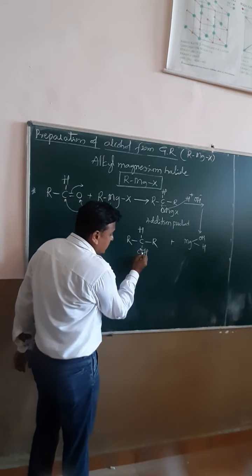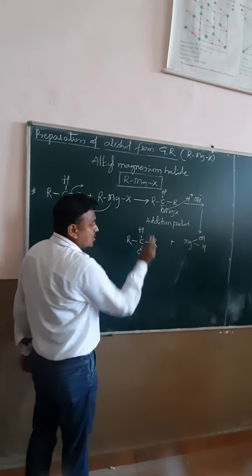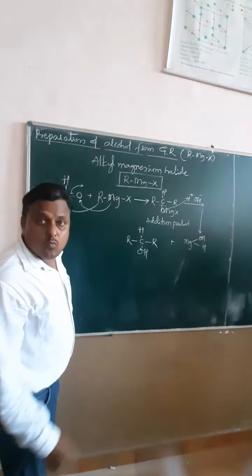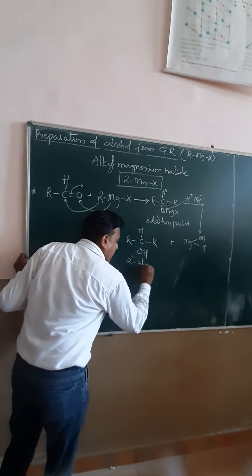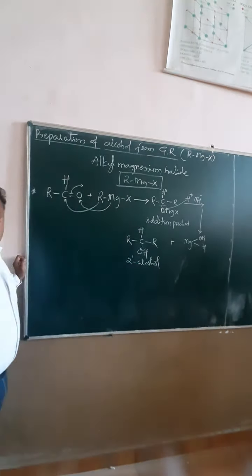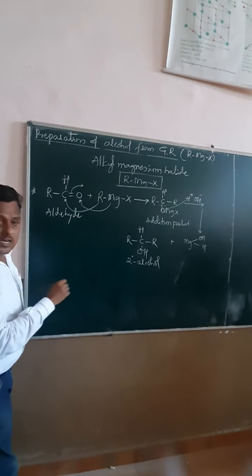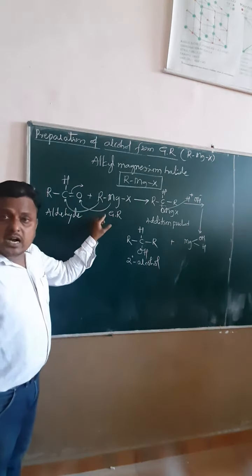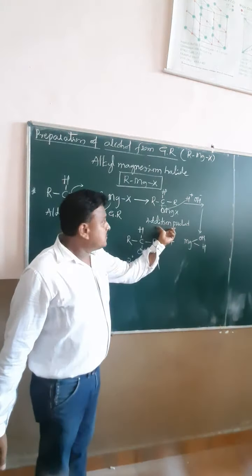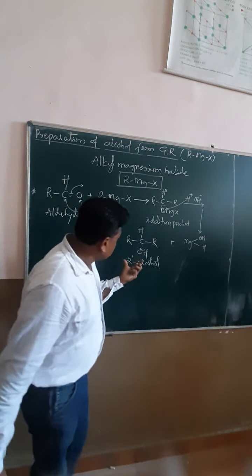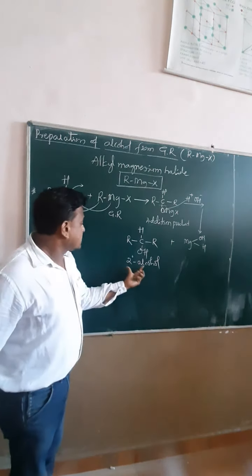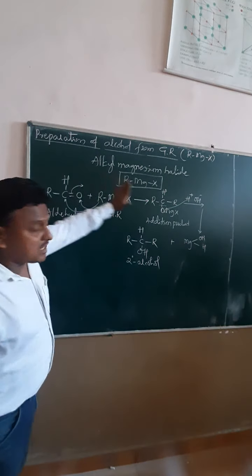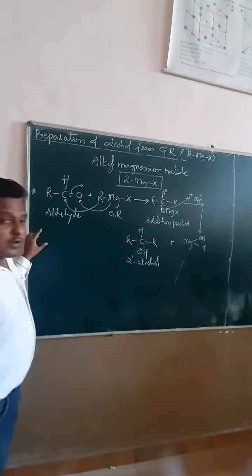We know the definition. This gives us a secondary alcohol. When an aldehyde undergoes reaction with Grignard reagent, it forms an addition product which undergoes acid hydrolysis to form a secondary alcohol. This is a first general important point for our syllabus.